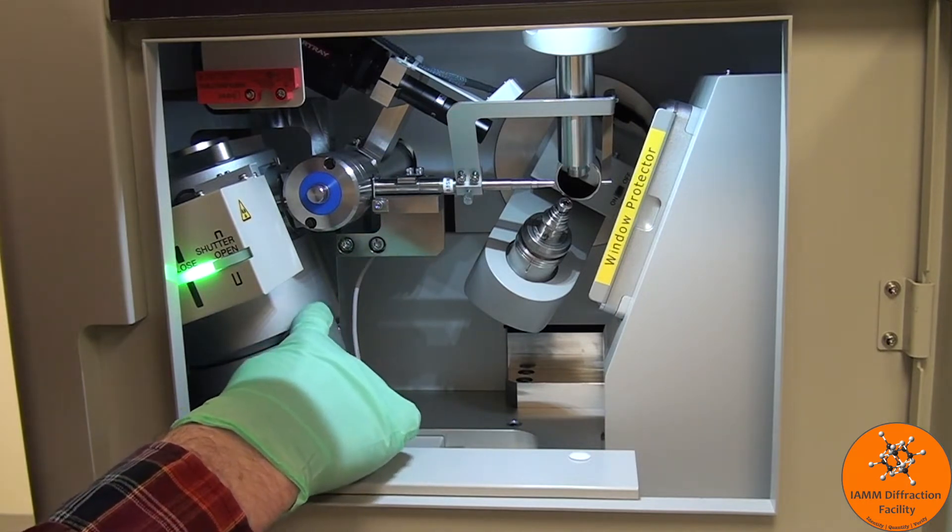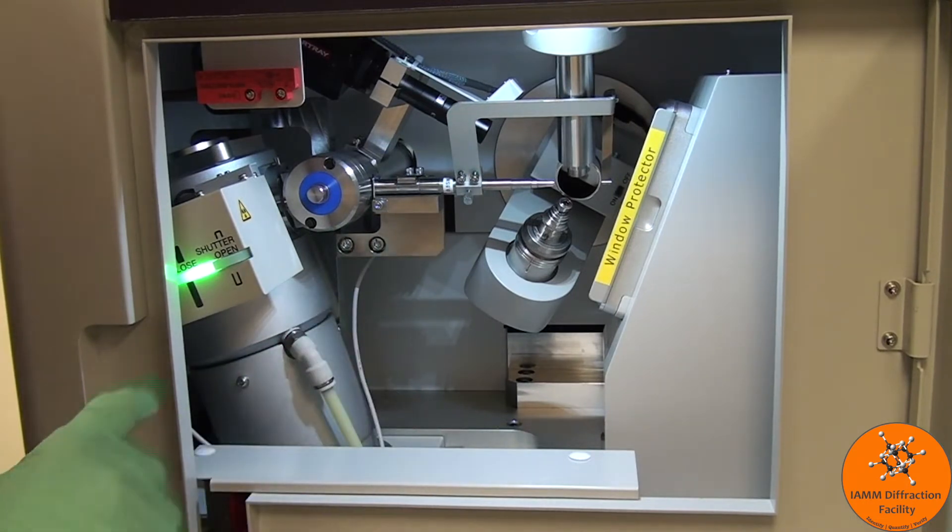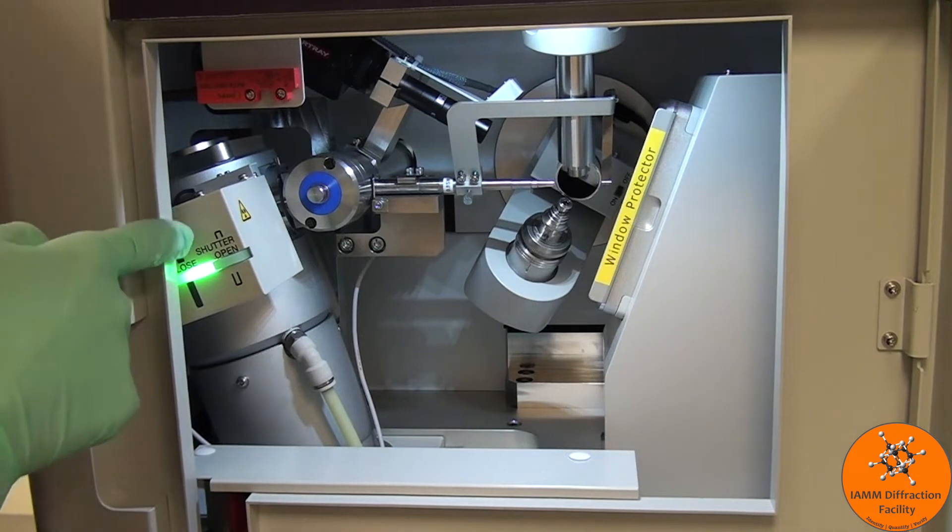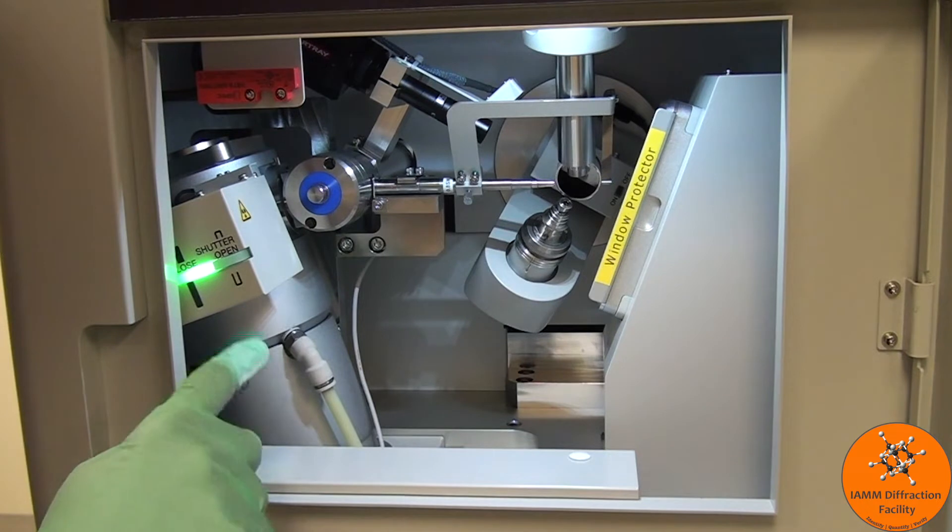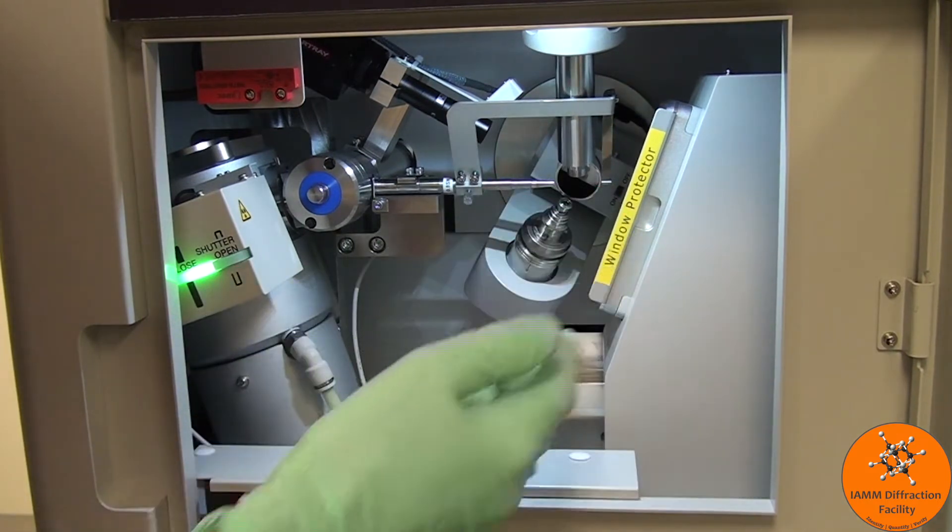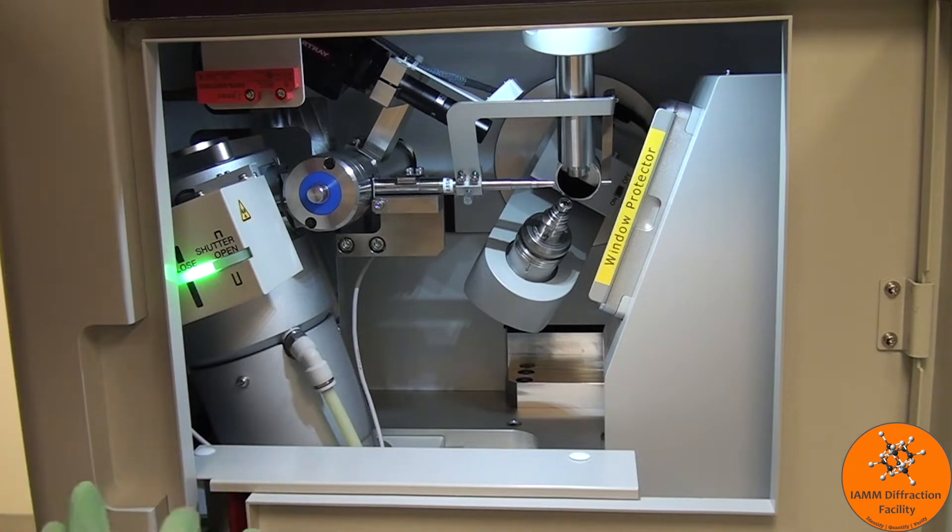On the left hand side, we have the x-ray tube. You can see here that it says shutter, so if this light is on, the shutter is closed and we can safely work inside. If this light is on, then the shutter is open and x-rays are flowing through the system, which means we do not want to be working inside.